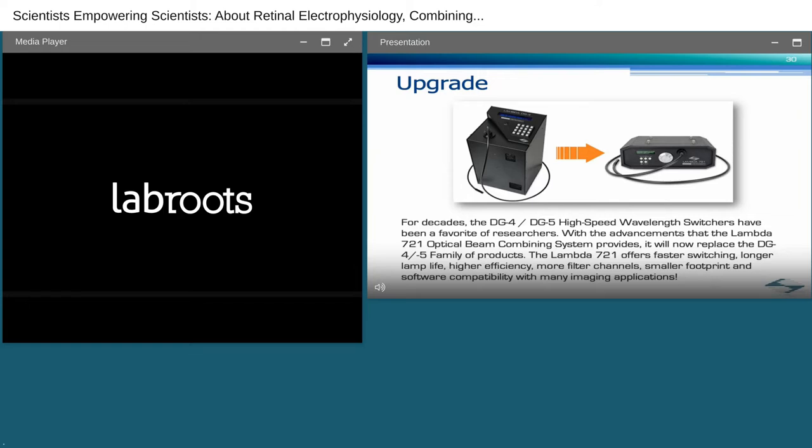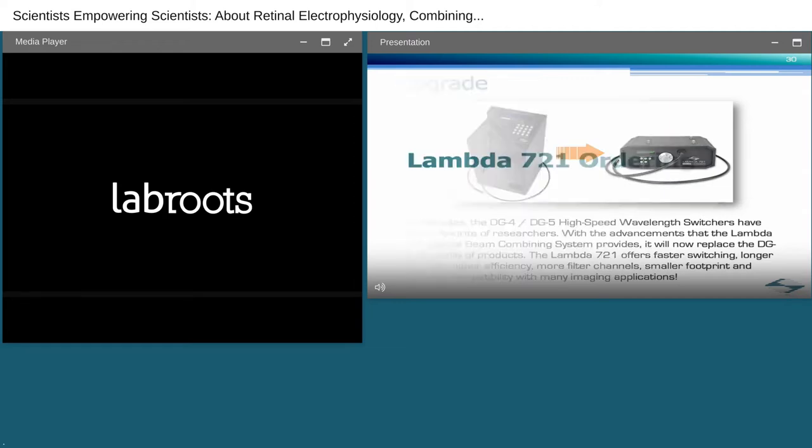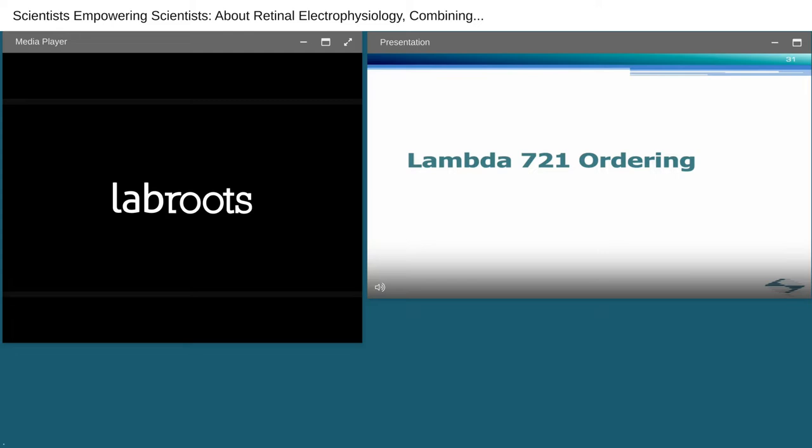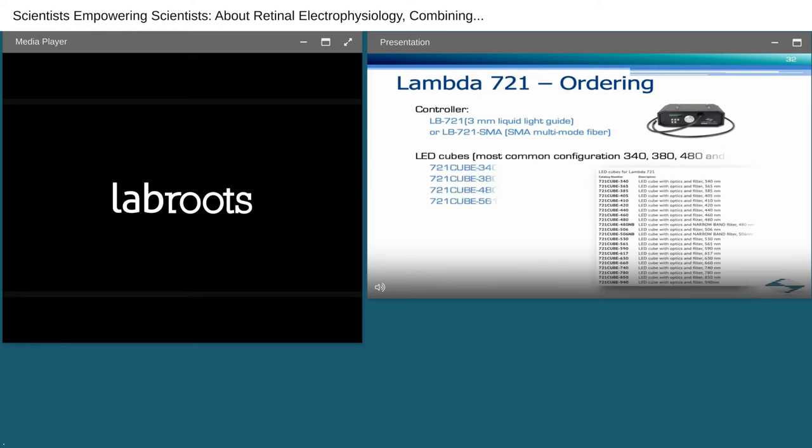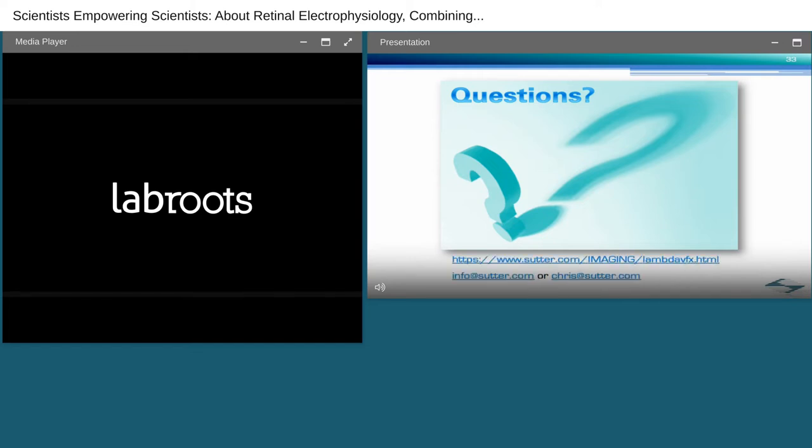With the advancements that the Lambda 721 optical beam combining system provides, it will now replace the DG4, DG5 family of products. The Lambda 721 offers faster switching, longer lamp life, higher efficiency, more filter channels, smaller footprint, and software compatibility with many imaging applications. Depending on the number of LED cubes installed, the Lambda 721 would also be a lower cost alternative. To all our DG4, DG5 customers, I want to assure you that Sutter will continue to support and service existing DG4 products until we are no longer able to due to part obsolescence. Finally, a few suggestions that may be useful when ordering. First, select one of the two base controller configurations. There are two options available, with a light guide or SMA fiber.